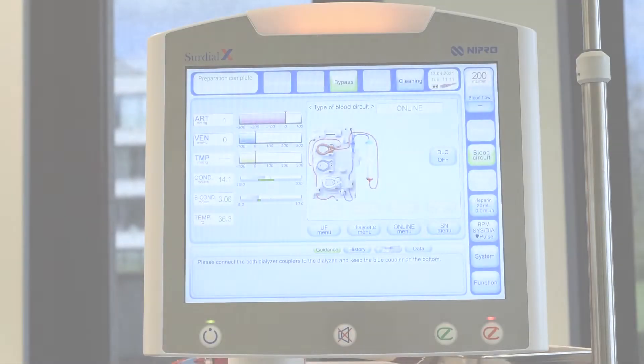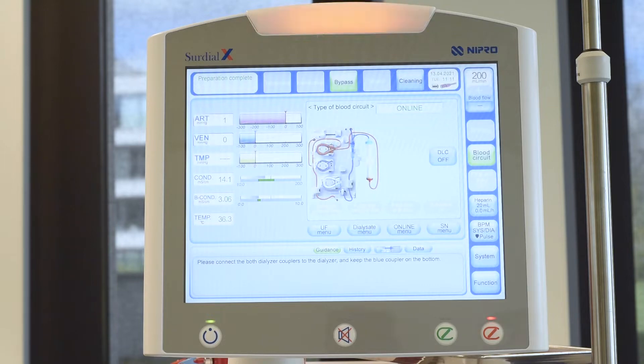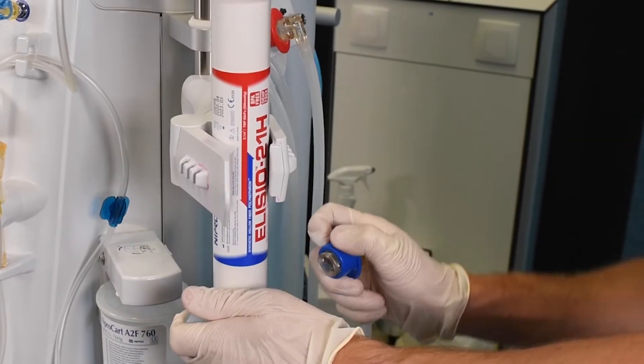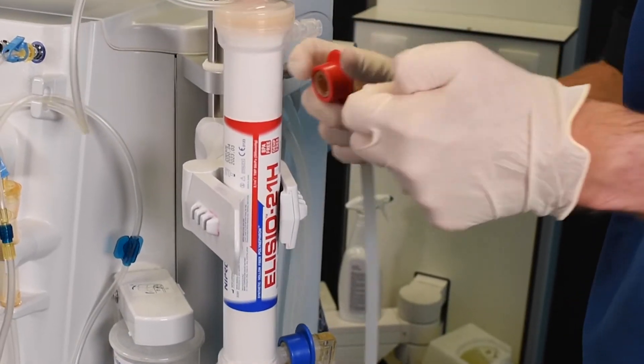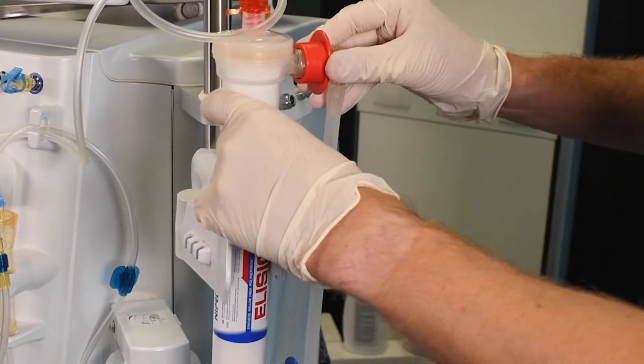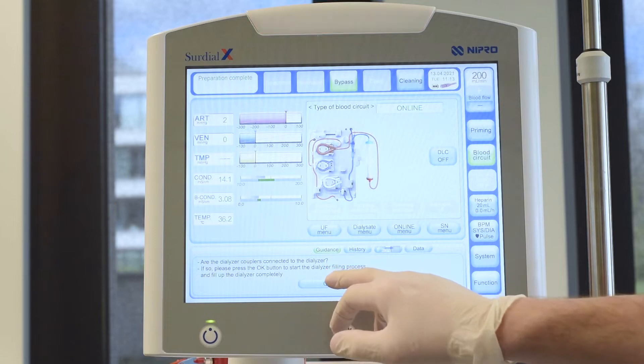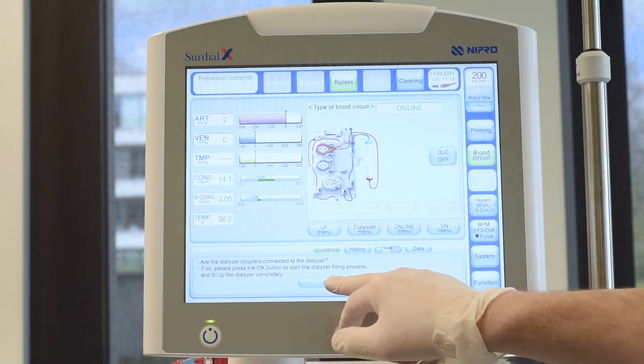To prepare for the priming of the dialysate compartment, turn the dialyzer with the blue side down as prompted by the machine and attach the dialyzer couplers. Once the couplers have been attached, follow the screen prompt and press OK to fill the dialysate compartment.